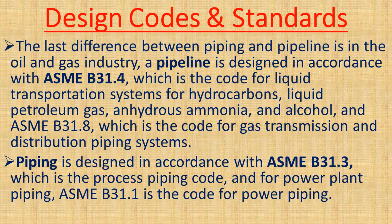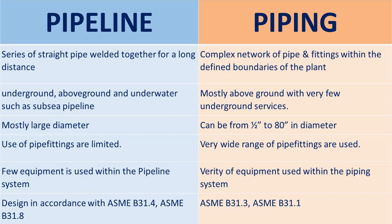In the oil and gas industry, a pipeline is designed in accordance with ASME B31.4, which is the code for liquid transportation systems for hydrocarbons, liquid petroleum gas, anhydrous ammonia, and alcohol, and ASME B31.8, which is the code for gas transmission and distribution piping systems. Piping is designed in accordance with ASME B31.3, the process piping code, and for power plant piping, ASME B31.1 is the code for power piping.